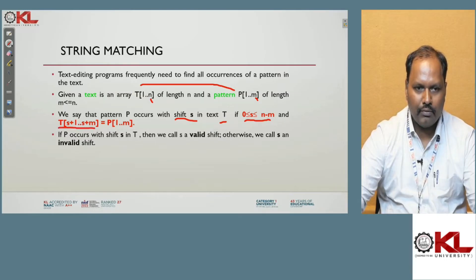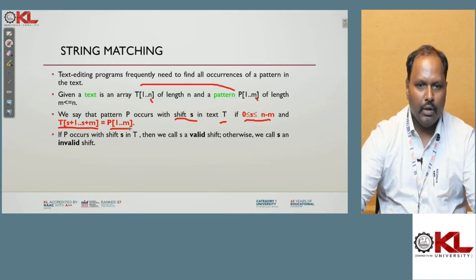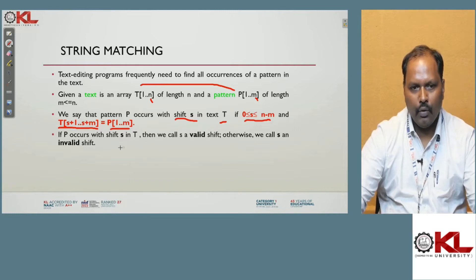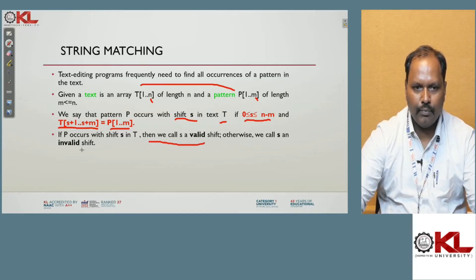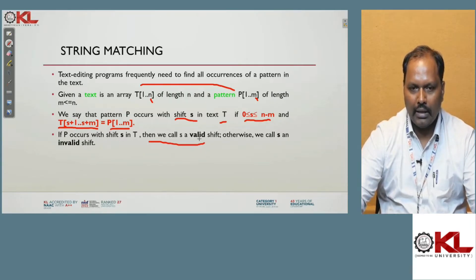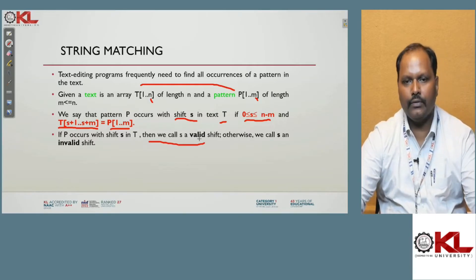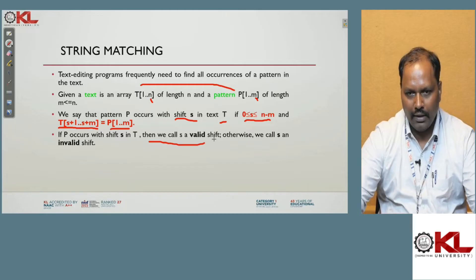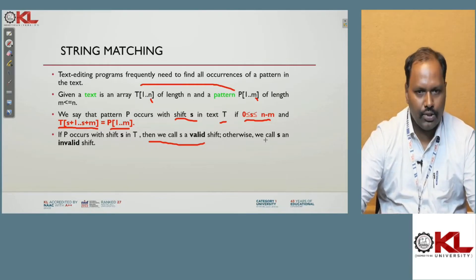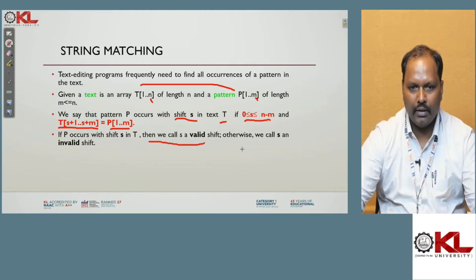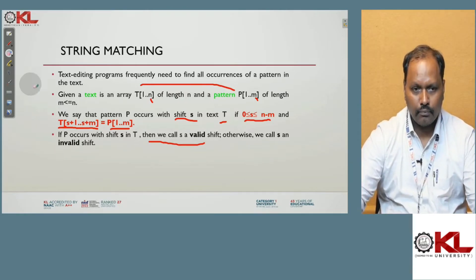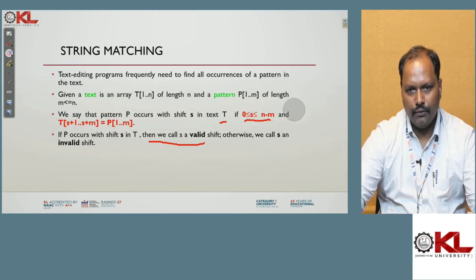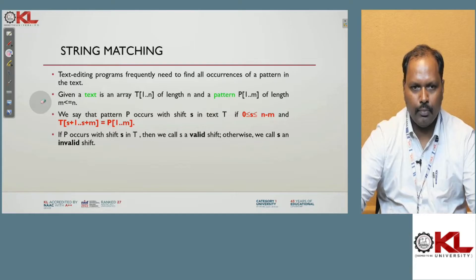The text window is T[s+1] to T[s+m] and the pattern is P[1 to m] — we have to match these. There are two types of shifts: valid shift and invalid shift. A valid shift means P occurs with shift s in T — the pattern letter matches the text letter. Otherwise, it is an invalid shift, meaning a mismatch occurred. This is the shifting concept in string matching.